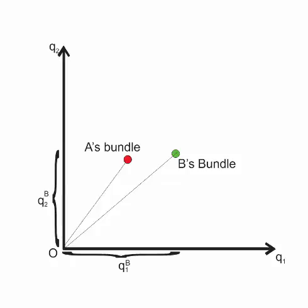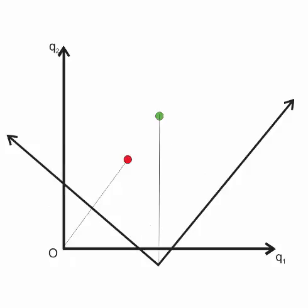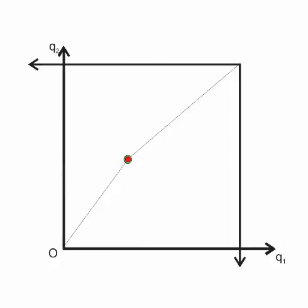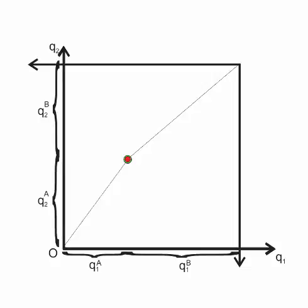What we're going to do is create an Edgeworth box by simply rotating individual B's allocation around so that now we have a box that has the size Q1A plus Q1B and Q2A plus Q2B, with that green and red dot in the middle indicating the allocation for both individuals over that total quantity of goods.